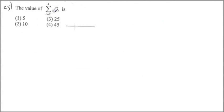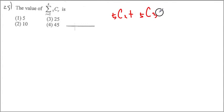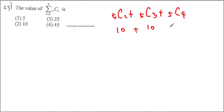Here we are looking at 5C2 plus 5C3 plus 5C4. You will realize that 5C2 is 10, and so is 5C3 once you plug into the calculator. 5C4 becomes 5, so our answer becomes 25.